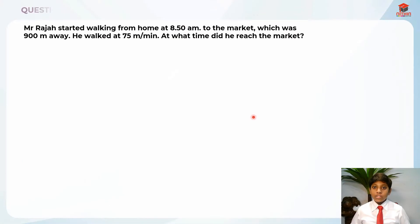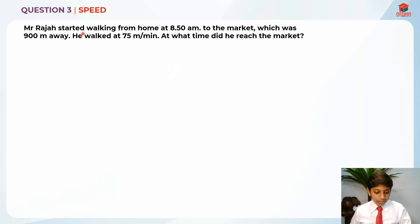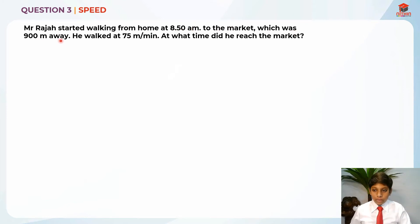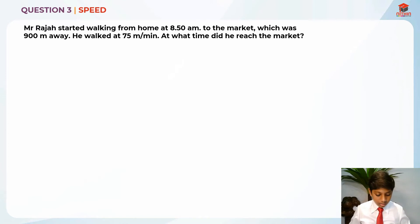This over here is question 3 and this question is testing us on speed. Let's read the question first. Mr. Raja started walking from home at 8.50am to the market, which was 900m away. He walked at 75m per minute. At what time did he reach the market?